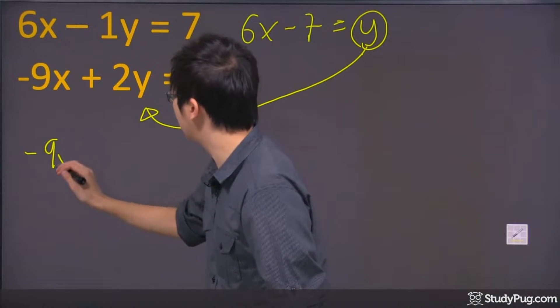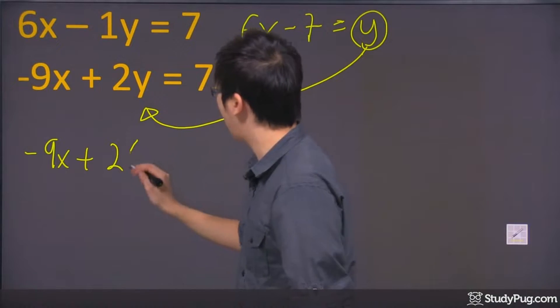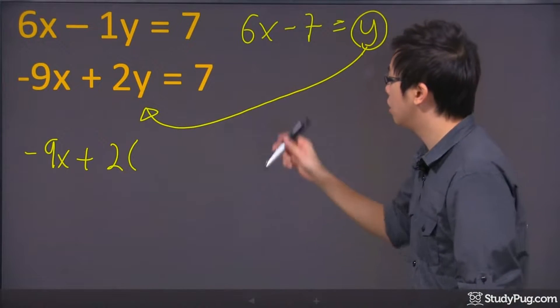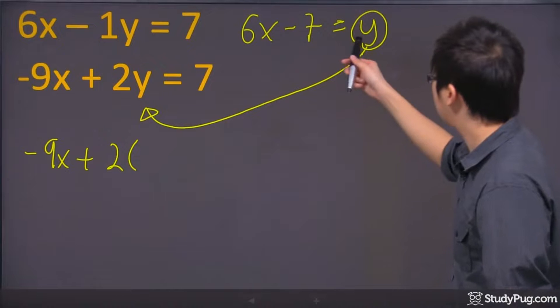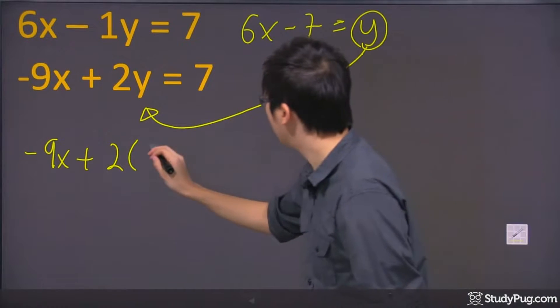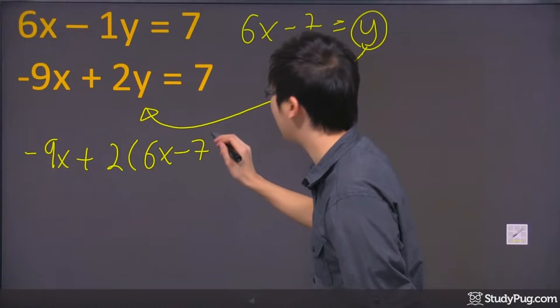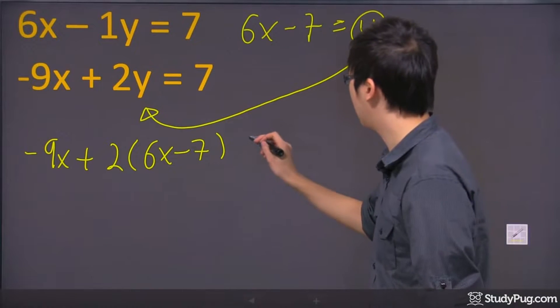Let's go ahead and actually solve this equation here. So after I plug it in, what that means is this y will represent this whole thing here, which is 6x minus 7. So I'm going to put the 6x minus 7 in the bracket. It has to be in the bracket. If you don't, you're in trouble.